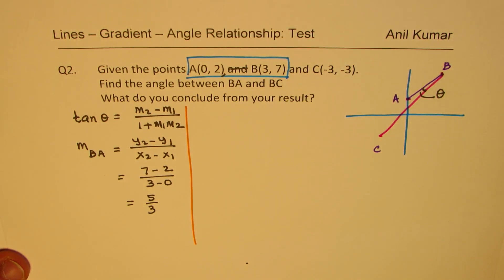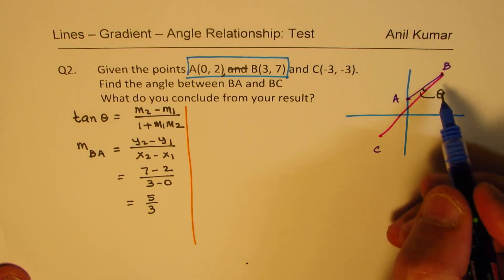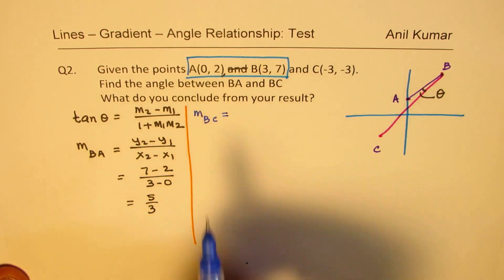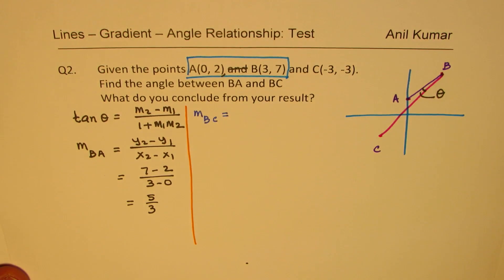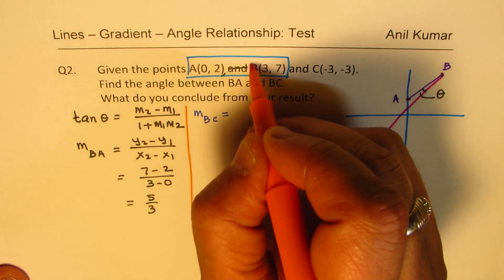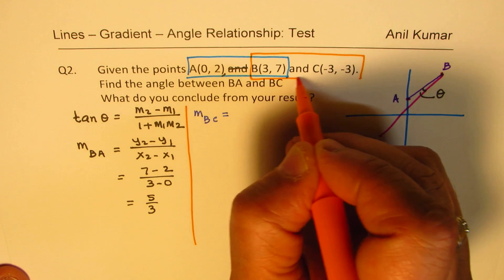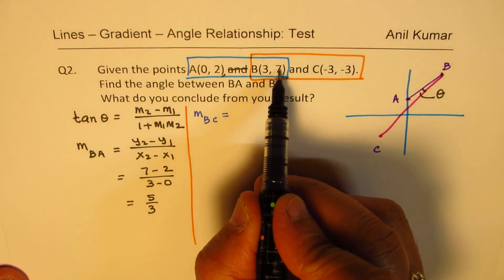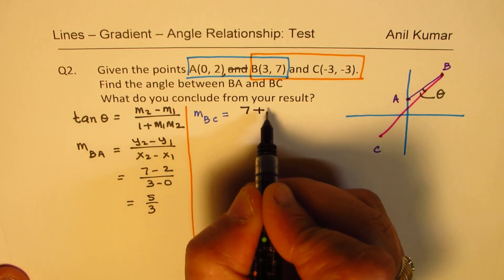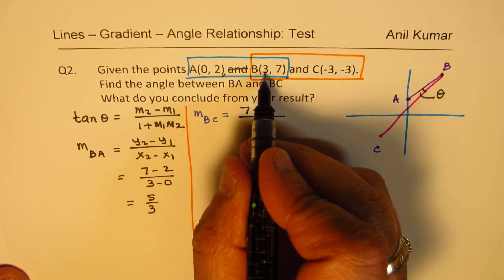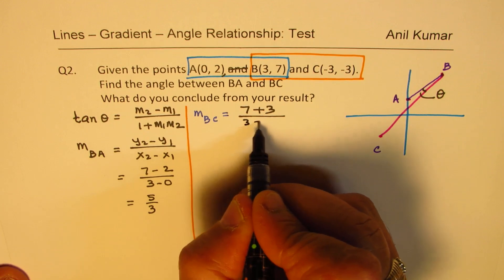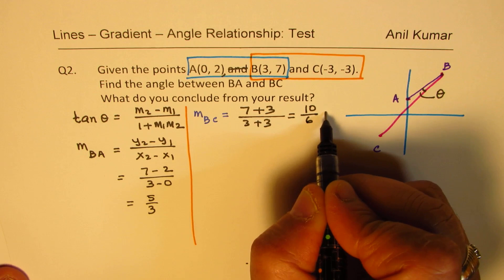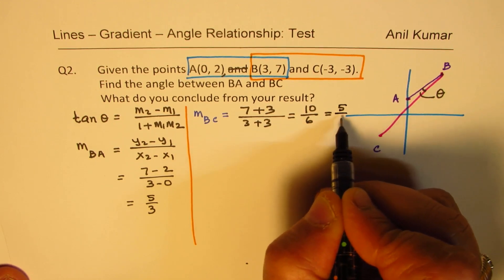Now let's find the slope for the other line, which is BC. So for B to C, we are going to now take these two points, B and C. So we can write this as 7 minus minus 3, so it becomes 7 plus 3, and 3 minus minus 3, that means 3 plus 3. And that gives you 10 over 6, which is also 5 over 3.